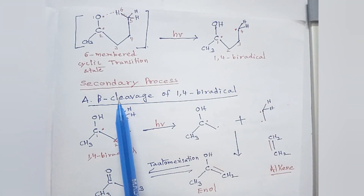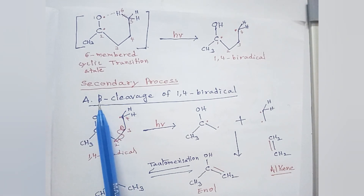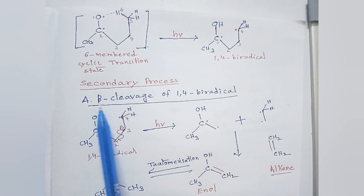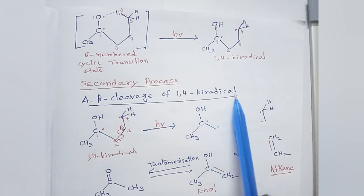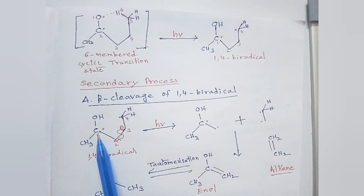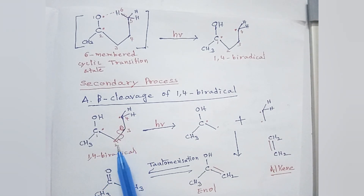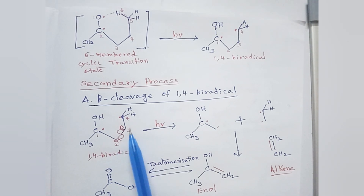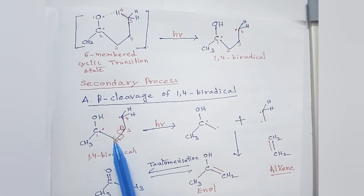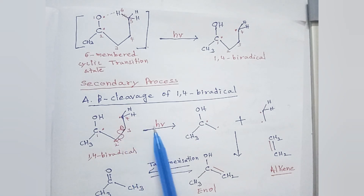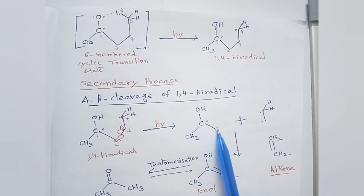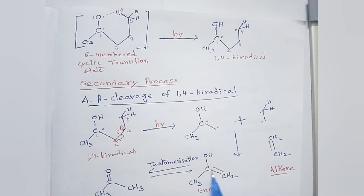Now let us see the secondary process. The 1,4-biradical can either undergo beta cleavage or cyclization. In beta cleavage, the bond between the alpha carbon and the beta carbon — the beta bond — undergoes homolytic cleavage, forming one radical on the alpha carbon and one on the beta carbon. The radical on the alpha carbon and the existing oxygen radical join together to form a bond, giving us enol: OH-C double bond CH2-CH3.